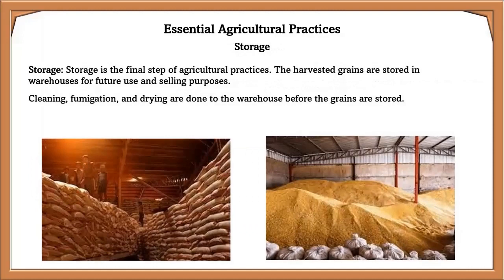Storage is the final step of agricultural practice. The harvested grains are stored in a warehouse for future use and selling purposes. A better plant protection process must be used to protect grains from rodents and insect pests. Cleaning, fumigation, and drying are done to warehouses before grains are stored, and the grains are later transported to different places throughout the year.